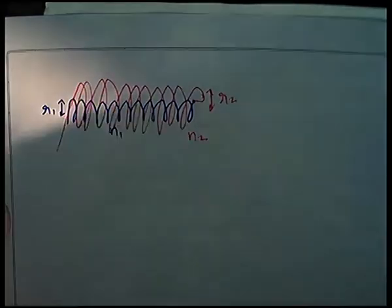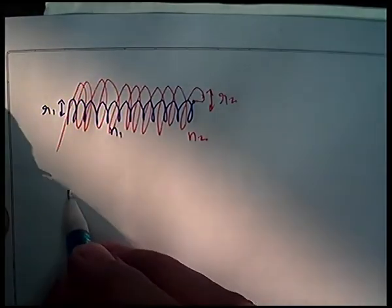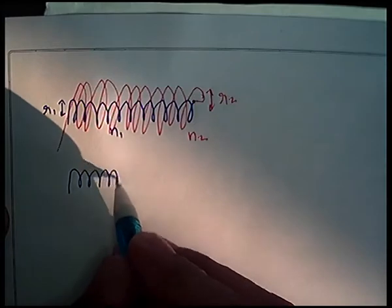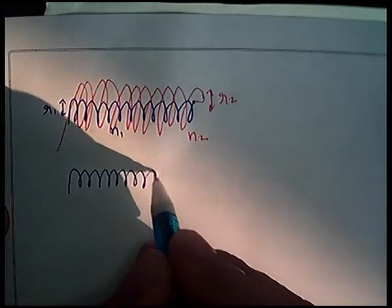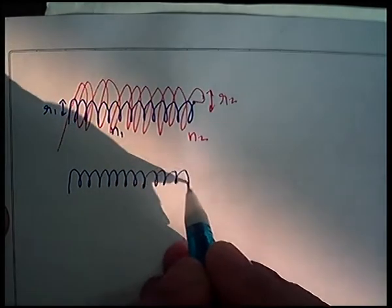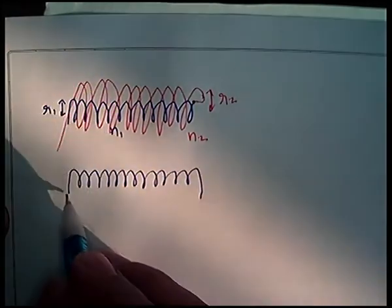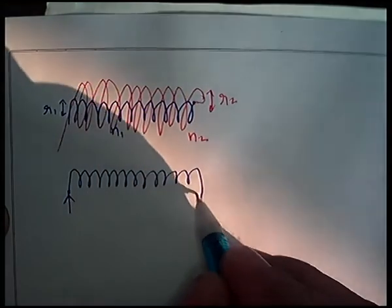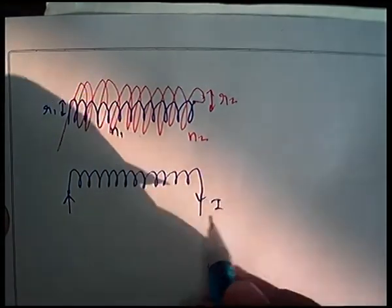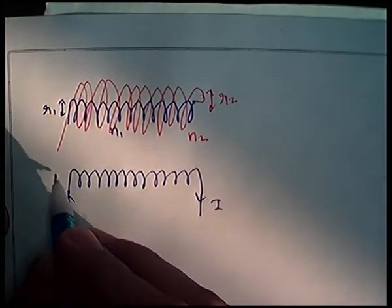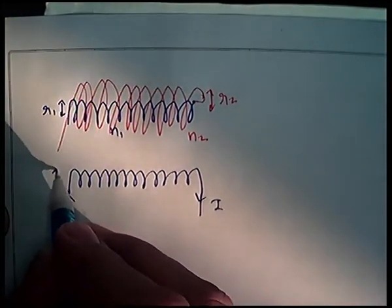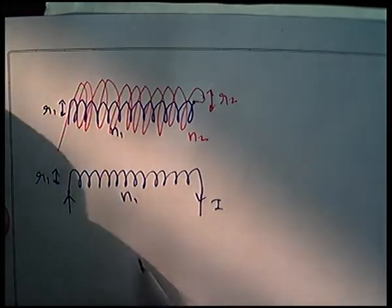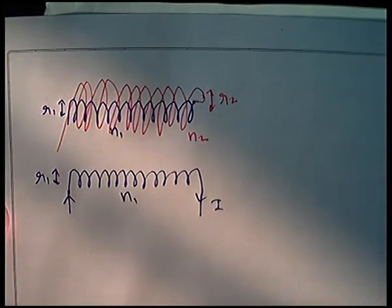First we draw both of them simply next to each other. This is your inner coil. The current is I, the radius is R1, and the number of turns per unit length is N1.